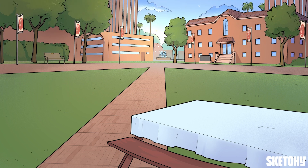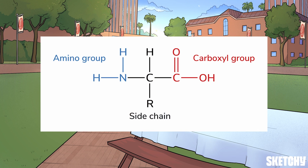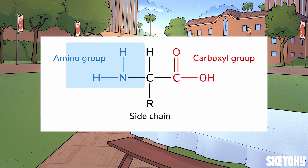But before we chomp into all the juicy details, let's have a quick refresher on the structure of alpha amino acids. These molecules consist of a central alpha carbon, which is almost always chiral. Glycine is the exception, but don't worry about that for now. The alpha carbon is bonded to a hydrogen, a carboxyl group, an amino group, and an R group — that's the side chain that determines the amino acid's identity.